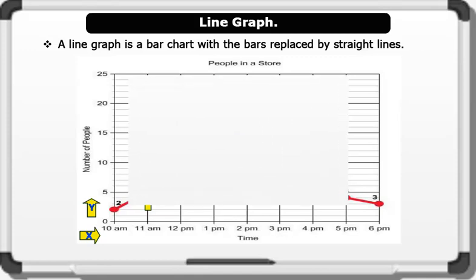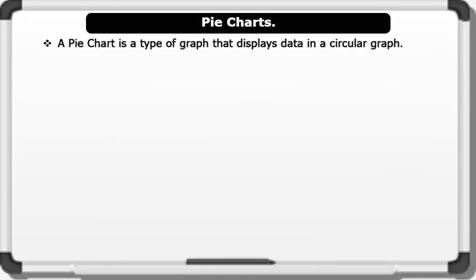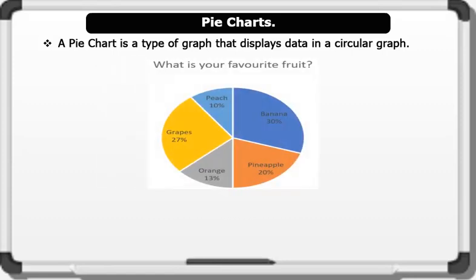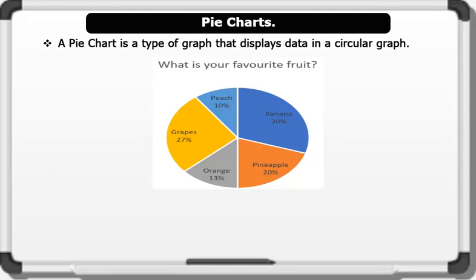Pie charts. A pie chart is a type of graph that displays data in a circular graph. Below is a pie chart. The pieces of the graph are proportional to the fraction of the whole in each category.